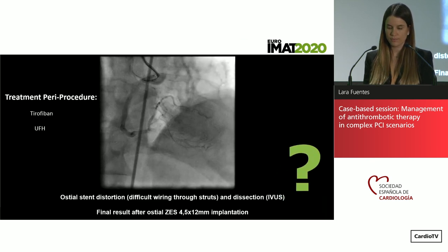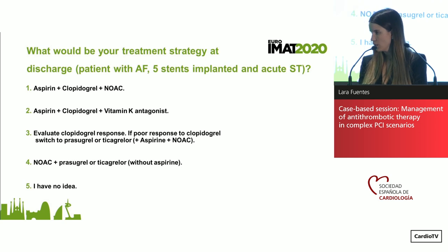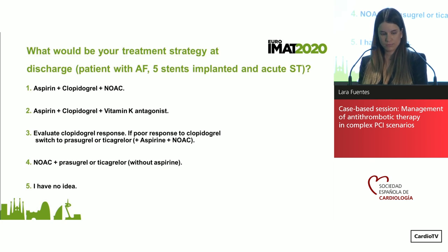Here comes the second question, related to immediate treatment after a successful PCI. Remember: a patient with ventricular fibrillation, indication for rivaroxaban, five stents implanted, and stent thrombosis. What would be your treatment strategy? Option one: aspirin plus clopidogrel plus NOAC (triple antithrombotic). Option two: aspirin plus clopidogrel plus vitamin K antagonist (triple with VKA). Option three: evaluate clopidogrel response and depending on response switch to prasugrel or ticagrelor. Option four: NOAC plus prasugrel or ticagrelor only (dual antithrombotic). Option five: I have no idea.